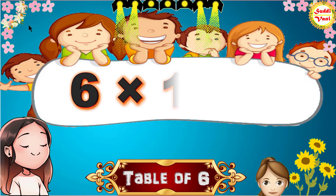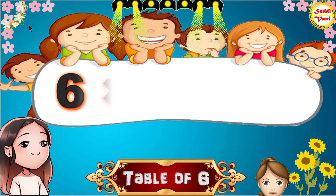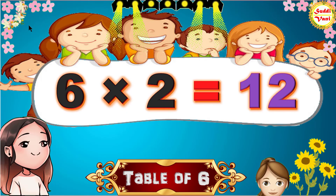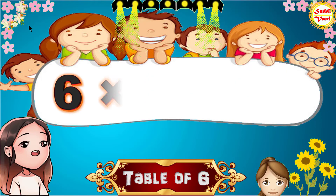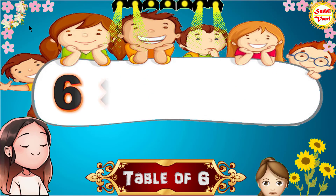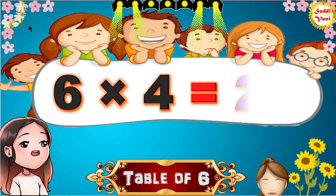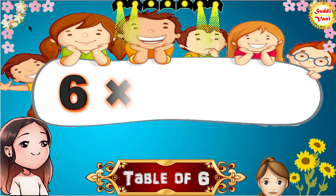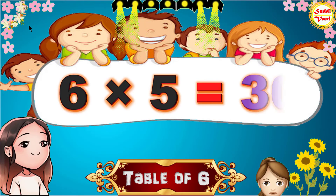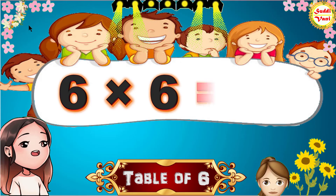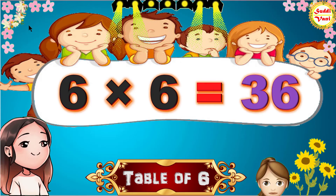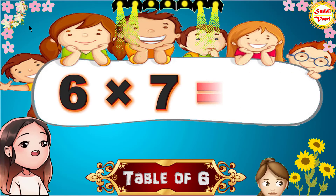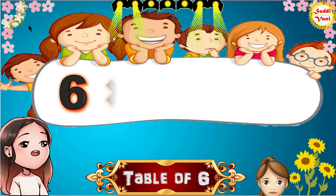Six ones are six, six twos are twelve, six threes are eighteen, six fours are twenty-four, six fives are thirty, six sixes are thirty-six.